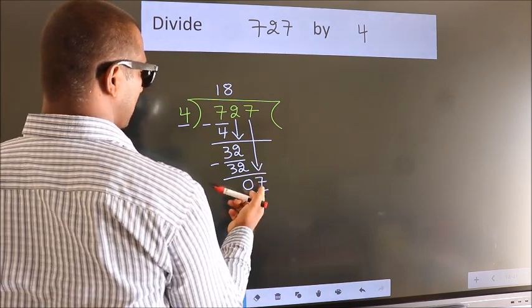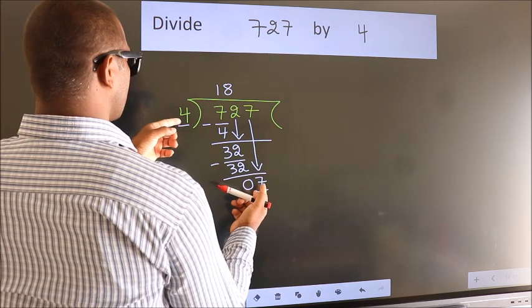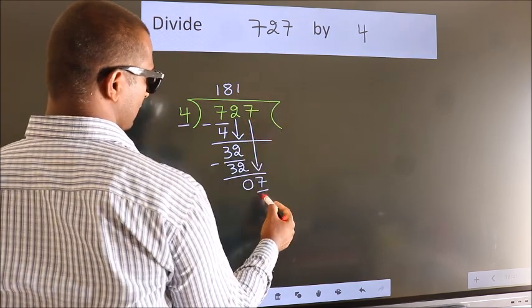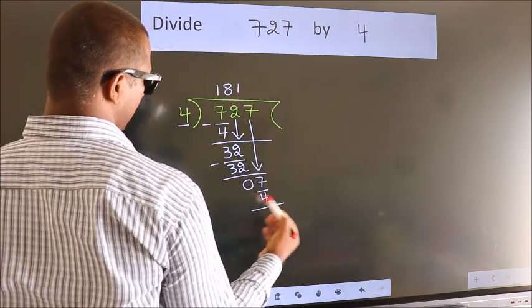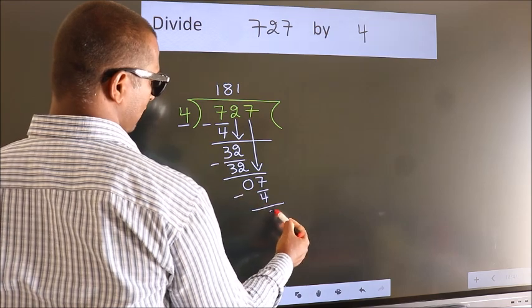A number close to 7 in the 4 table is 4 ones, which is 4. Now we subtract and get 3.